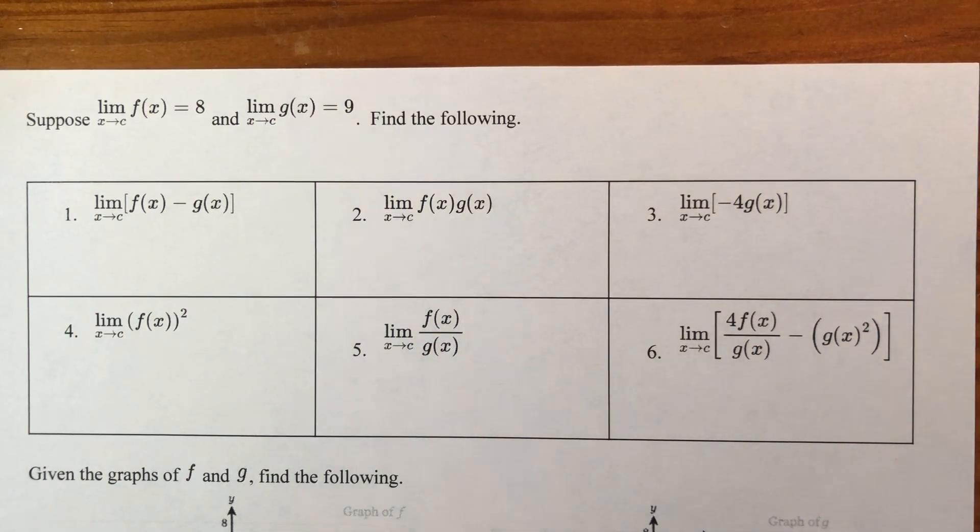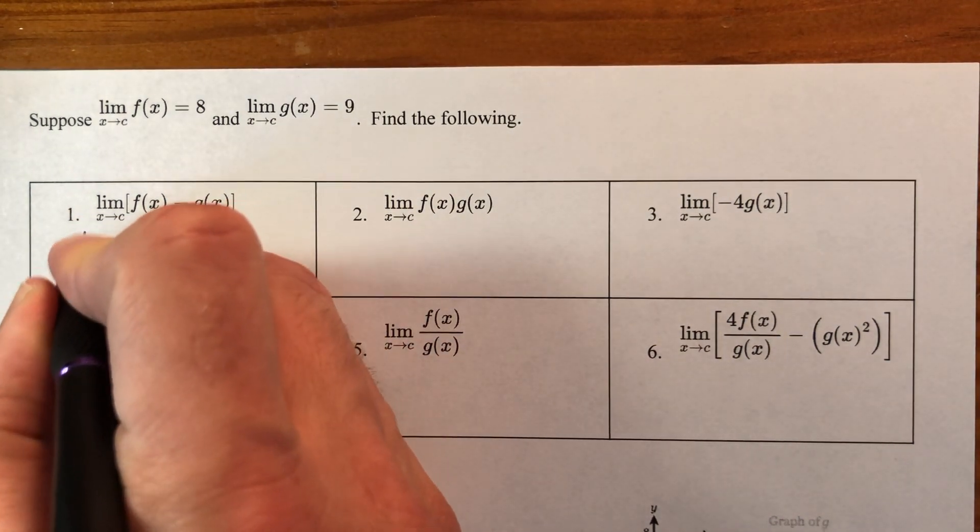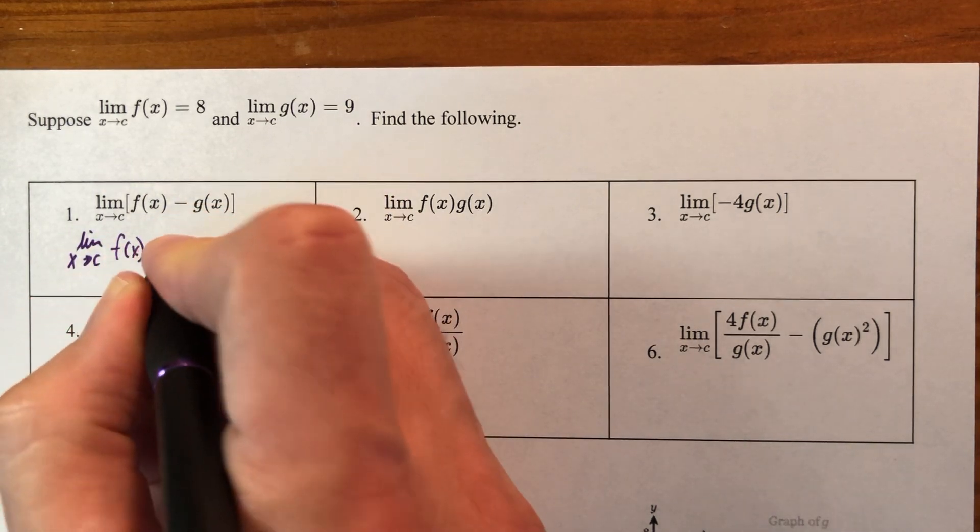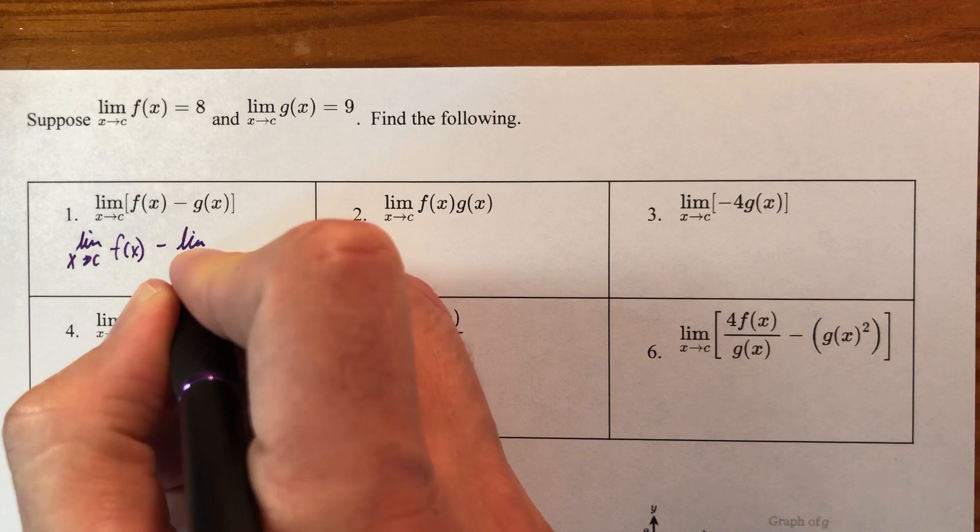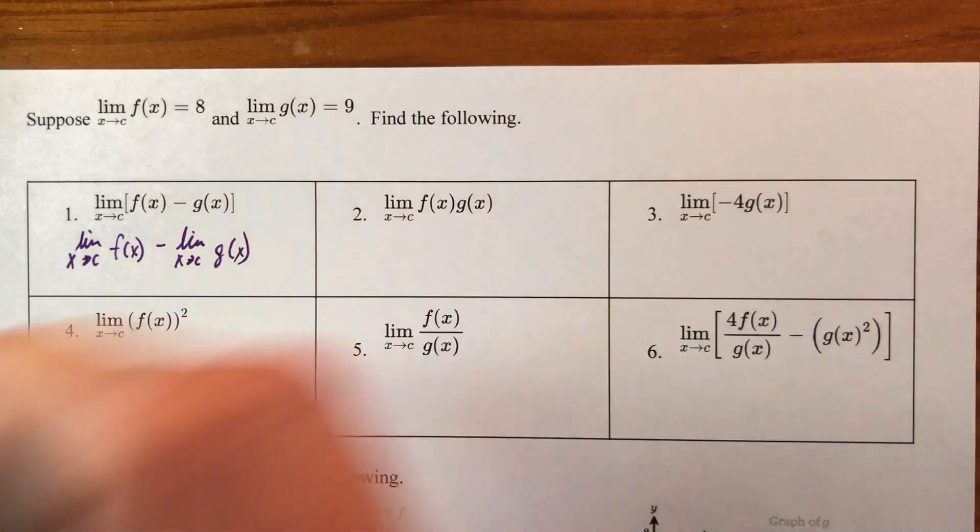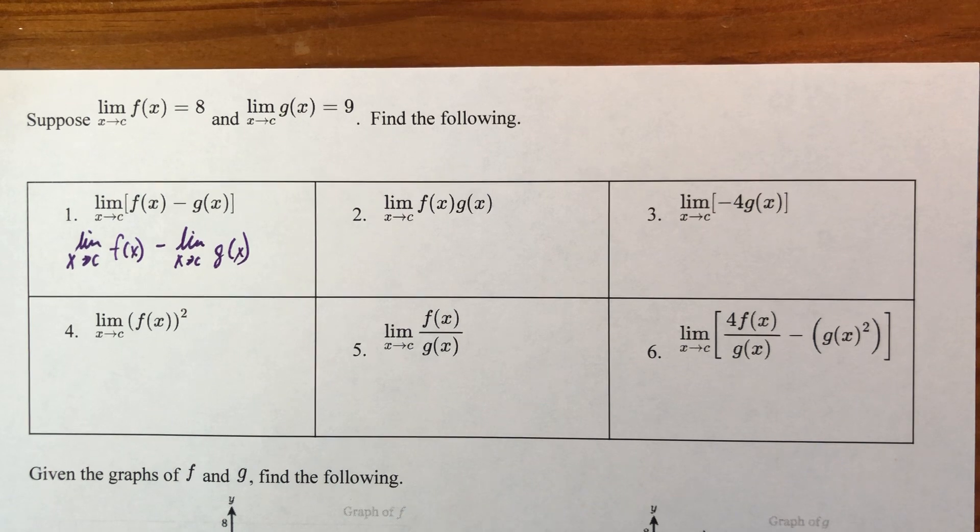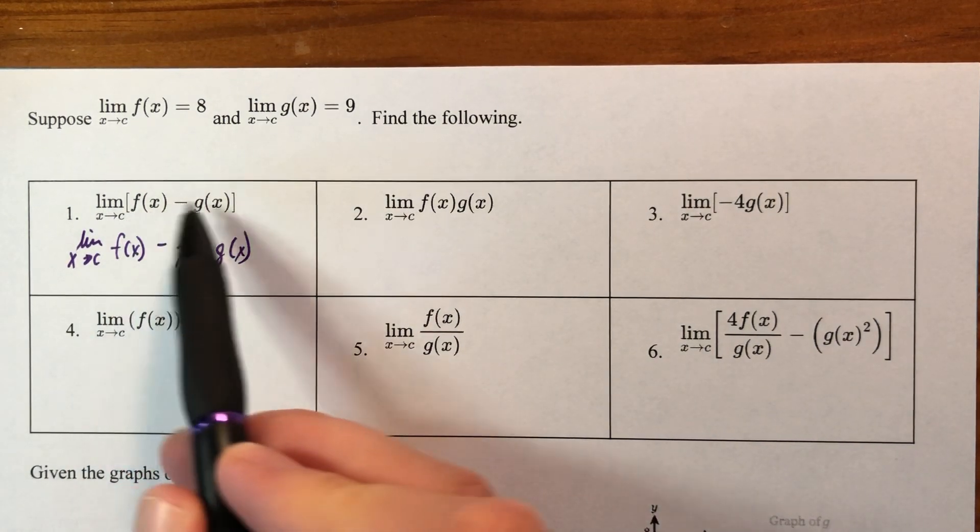But for number one, I could say, well, I'm really dealing with the limit as x approaches c of the f function, minus the limit as x approaches c for the g function. And really, I've never seen a student that looked at that and was like, well, how did we get this? We're just subtracting the limits, okay?